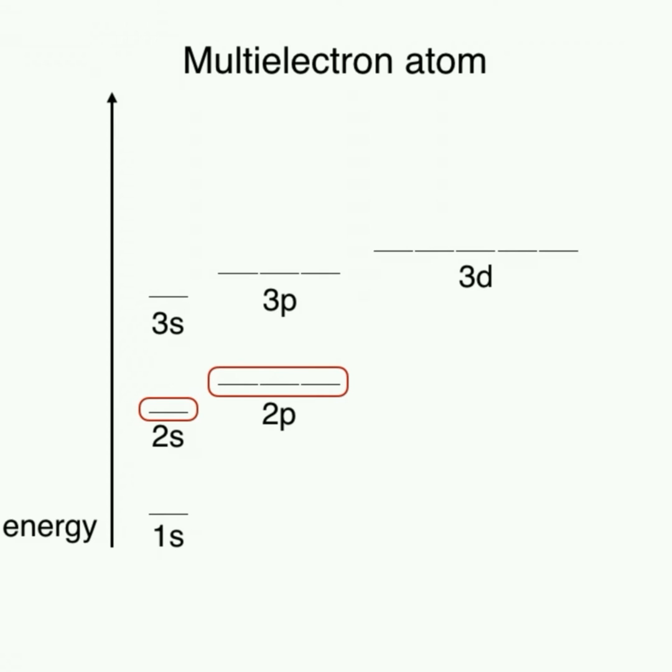This is due to the electron-electron repulsions found in multi-electron atoms. Another important note is that the energy of each given orbital is lower in this diagram than in the hydrogen diagram.